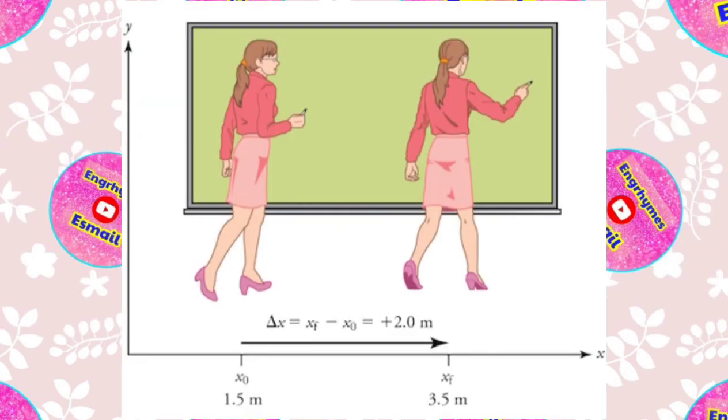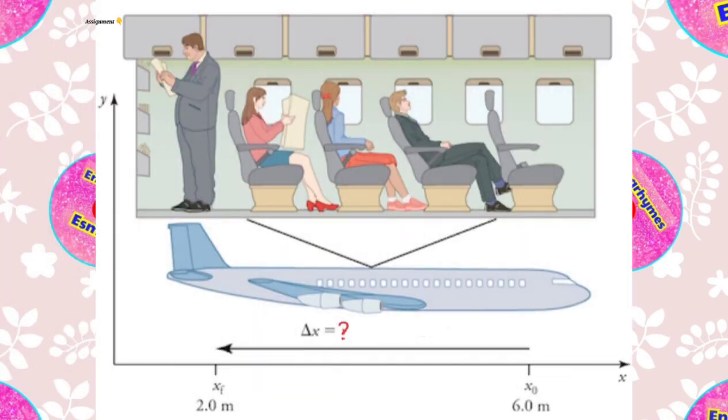Now for your assignment, consider the passenger below that walks relative to the plane. Solve for the airplane passenger's displacement considering the initial and final positions given below.